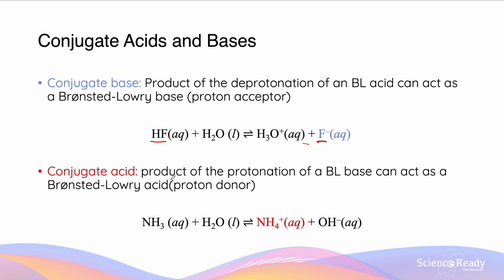And similarly a conjugate acid is a product of the protonation of a Bronsted-Lowry base and can act as a Bronsted-Lowry acid. So in this case ammonium NH4+ has been formed from NH3 gaining a hydrogen ion and this has the ability to relieve that proton to act as an acid.